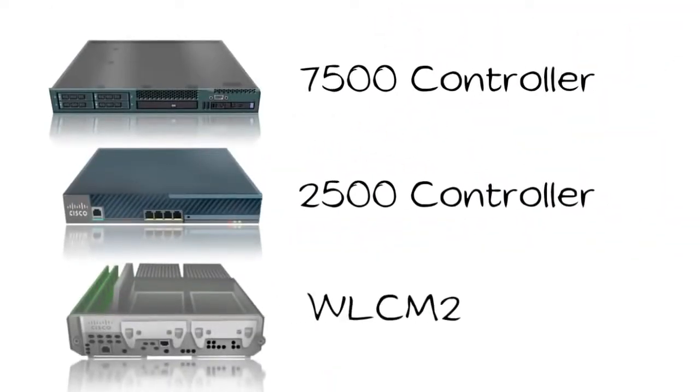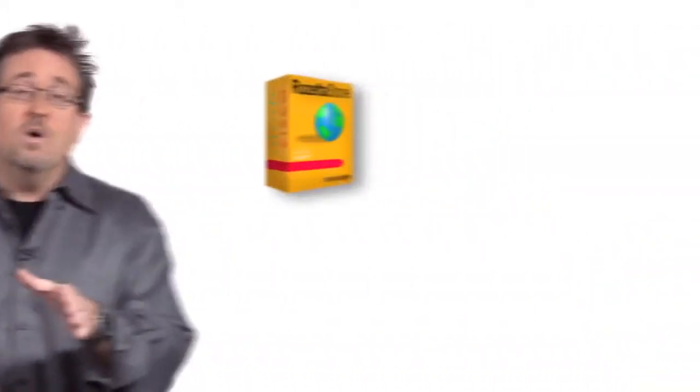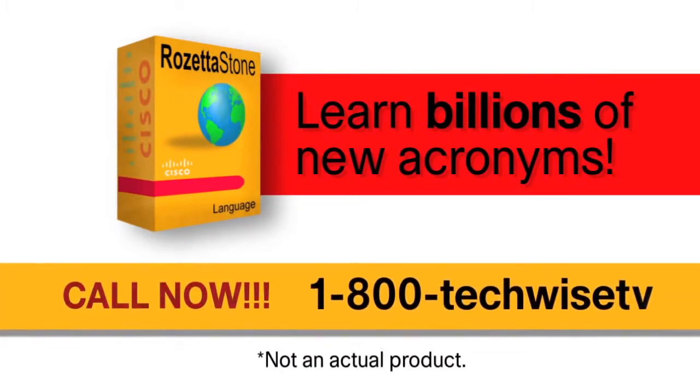Now how about those branch offices? Three products here focus squarely on the branch. The Flex 7500 controller, the 2500 controller, and the WLCM-2 for the SRE on the ISR-G2. My apologies, that was a mouthful. We're still waiting for the Rosetta Stone Cisco edition featuring the unified immersion method. Refer to your screen for details.